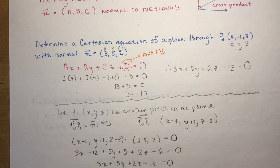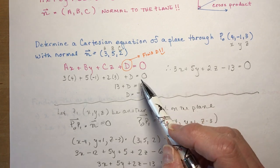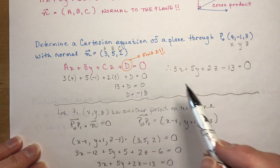3x plus 5y plus 2z minus 13 is equal to 0. Same, same. This obviously is the easiest way to do it. Just plug in your ABC's and x, y, z's and solve for d.